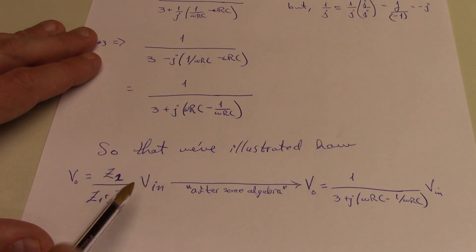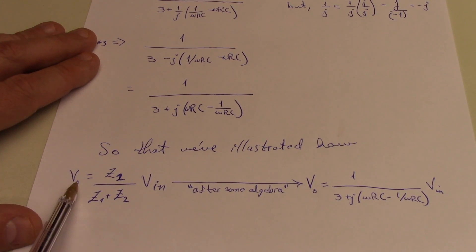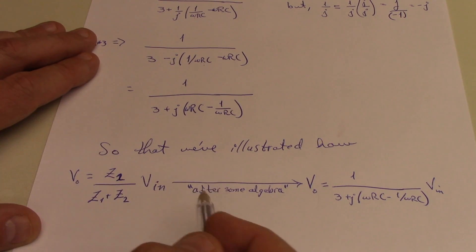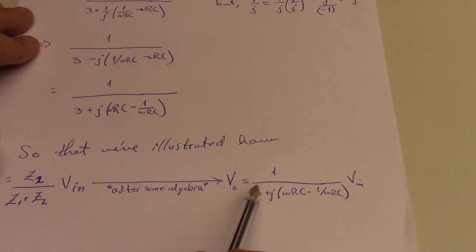So we've illustrated what we were trying to derive. Namely, that the expression for v0 equal to z2 over z1 plus z2 times vn becomes, after some algebra, v0 equals 1 over 3 plus j times quantity omega rc minus 1 over omega rc times vn.